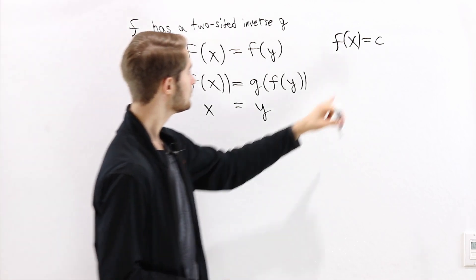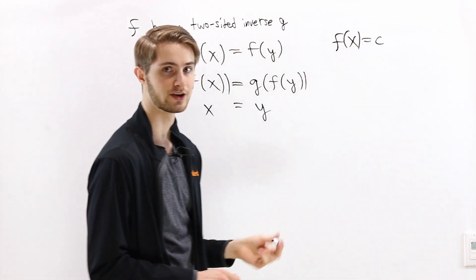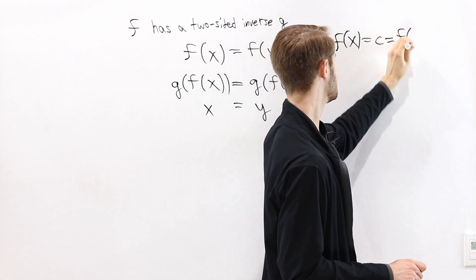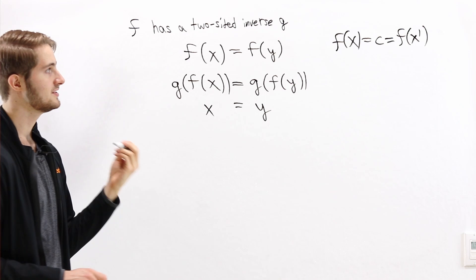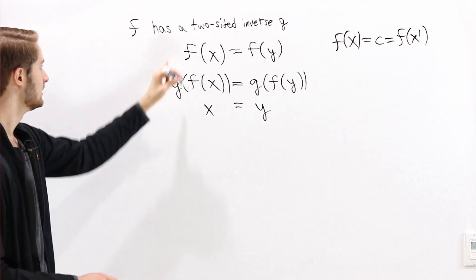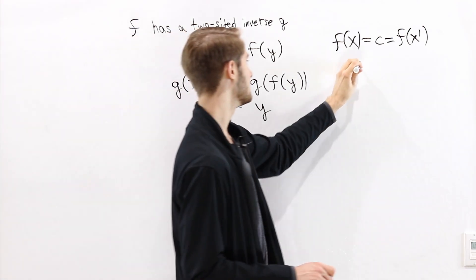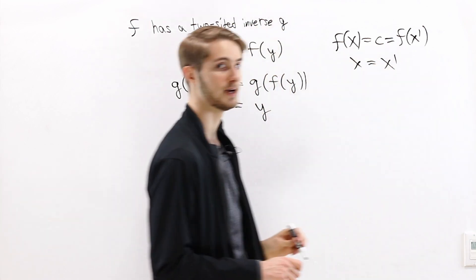has at most one solution for x. Because if we had two different solutions, x and x prime, then that would imply that f of x equals f of x prime, and because f is injective, that means that x equals x prime.